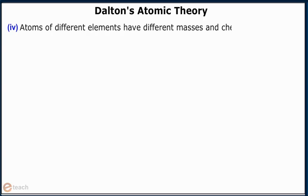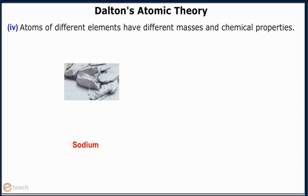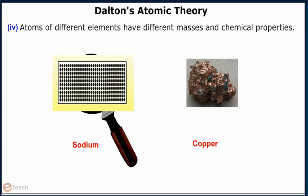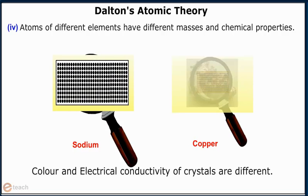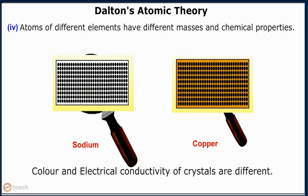Atoms of different elements have different masses and chemical properties. Color and electrical conductivity of crystals are different.